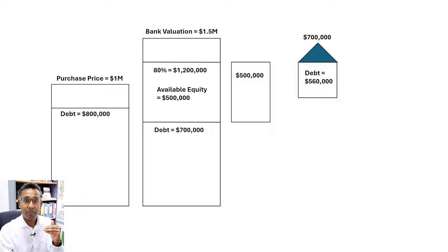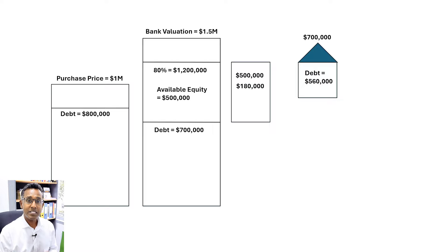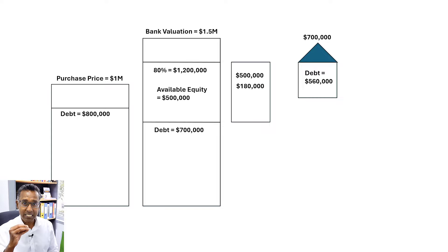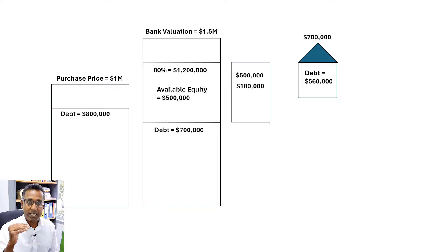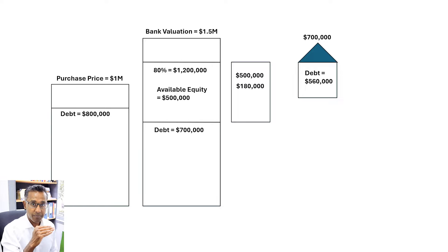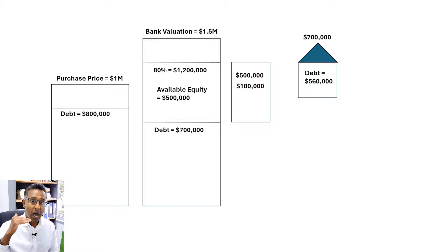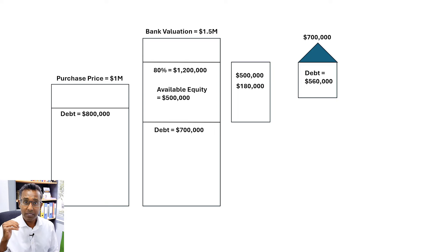This brings us to a very important point. You can see that $180,000 from your equity plus $560,000 equals $740,000 — but the purchase price is only $700,000. So yes, when you're doing things this way, you're actually borrowing 100% of the purchase price plus all the purchase costs. You're not using any of your own savings.